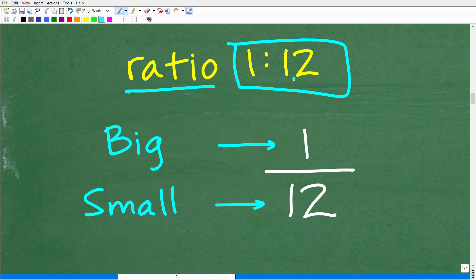Notice that I'm writing this ratio this way, one to twelve. This colon is another way to express the word 'to' when we're talking about ratio. This is a 1 to 12 ratio.